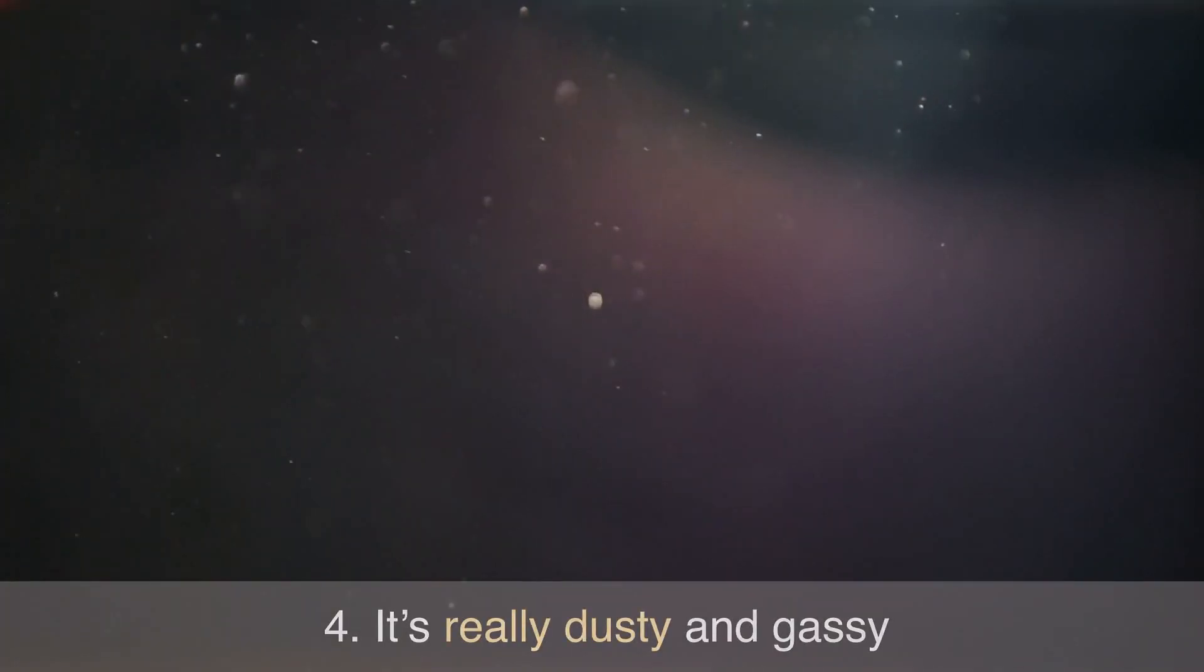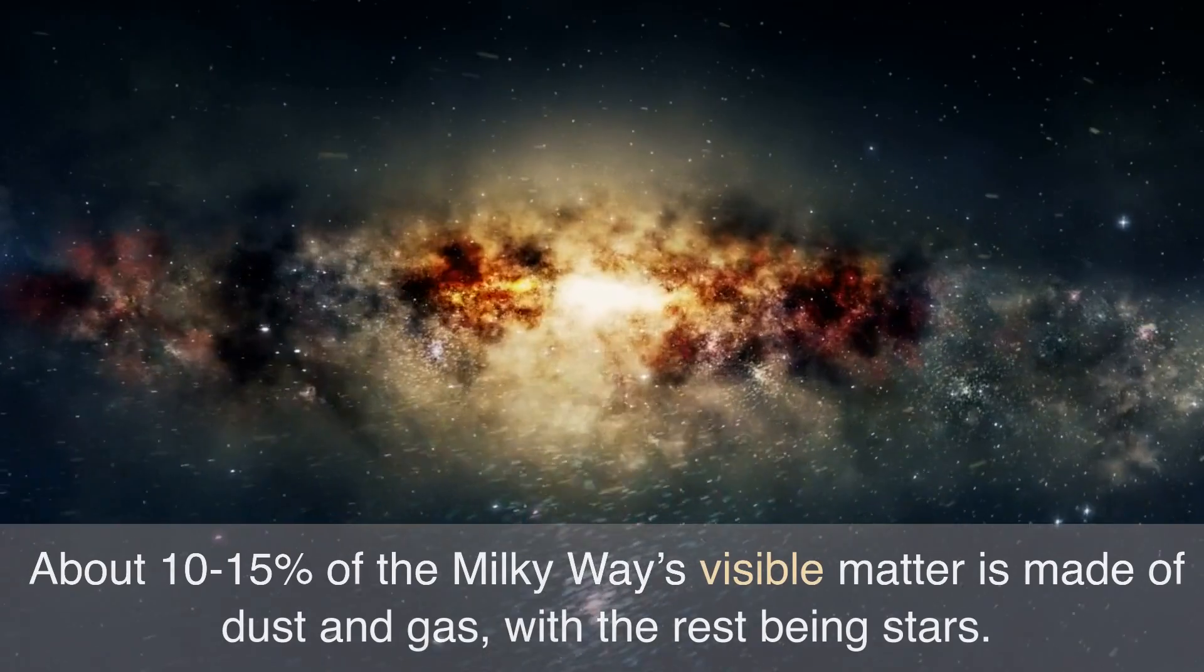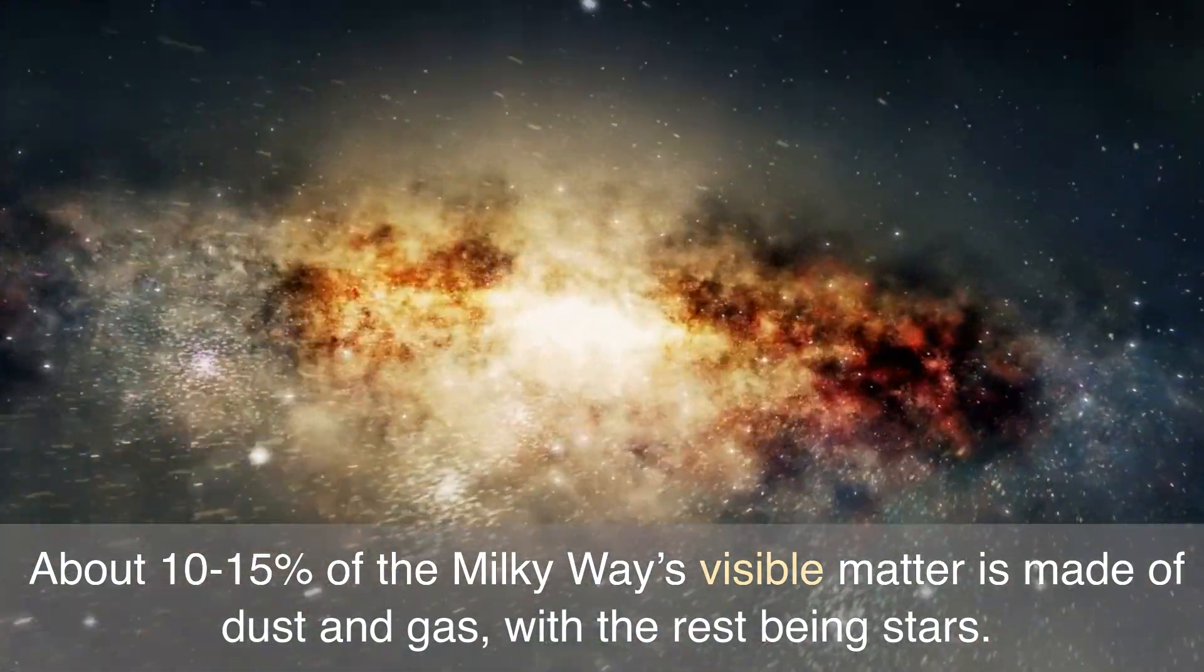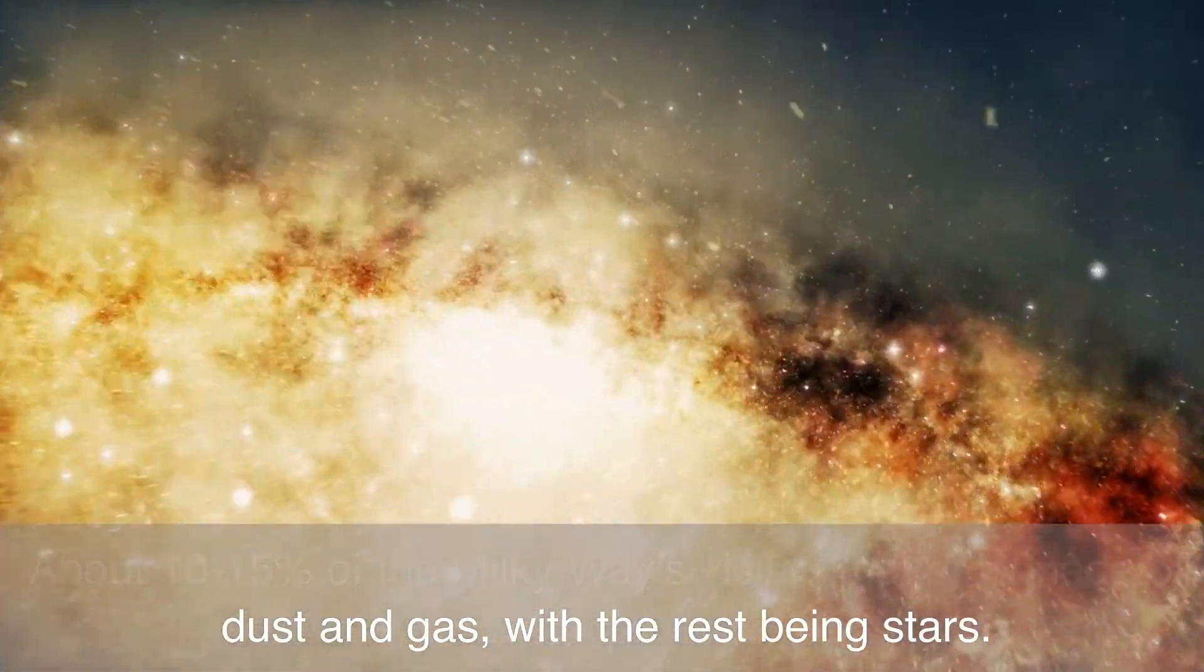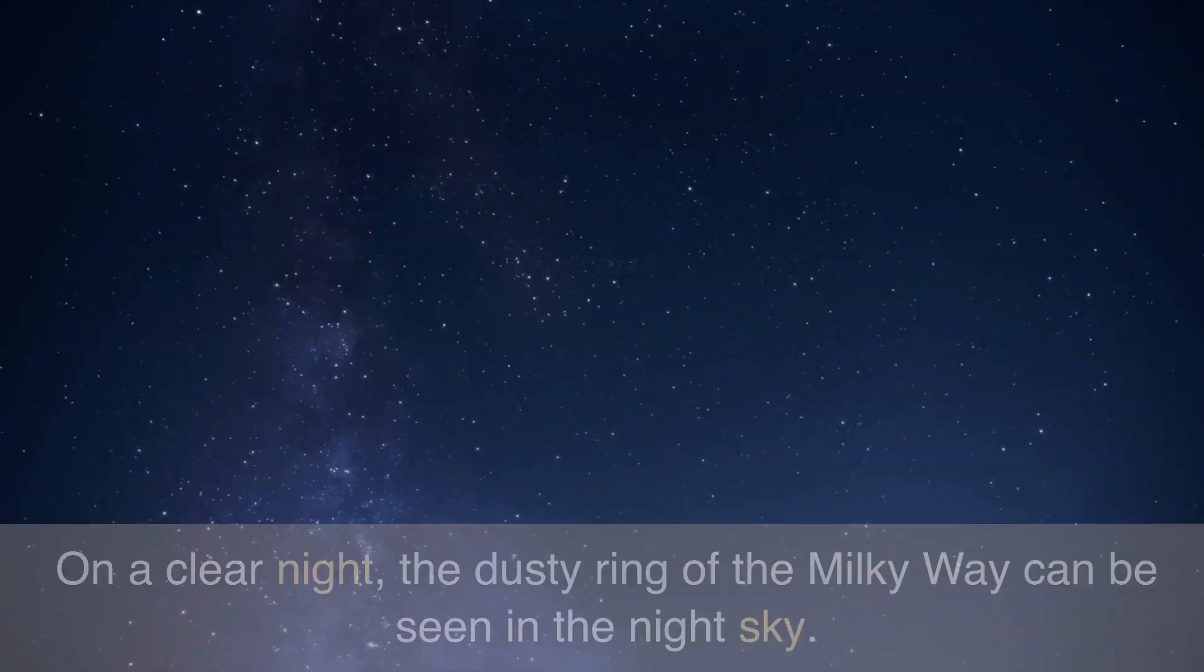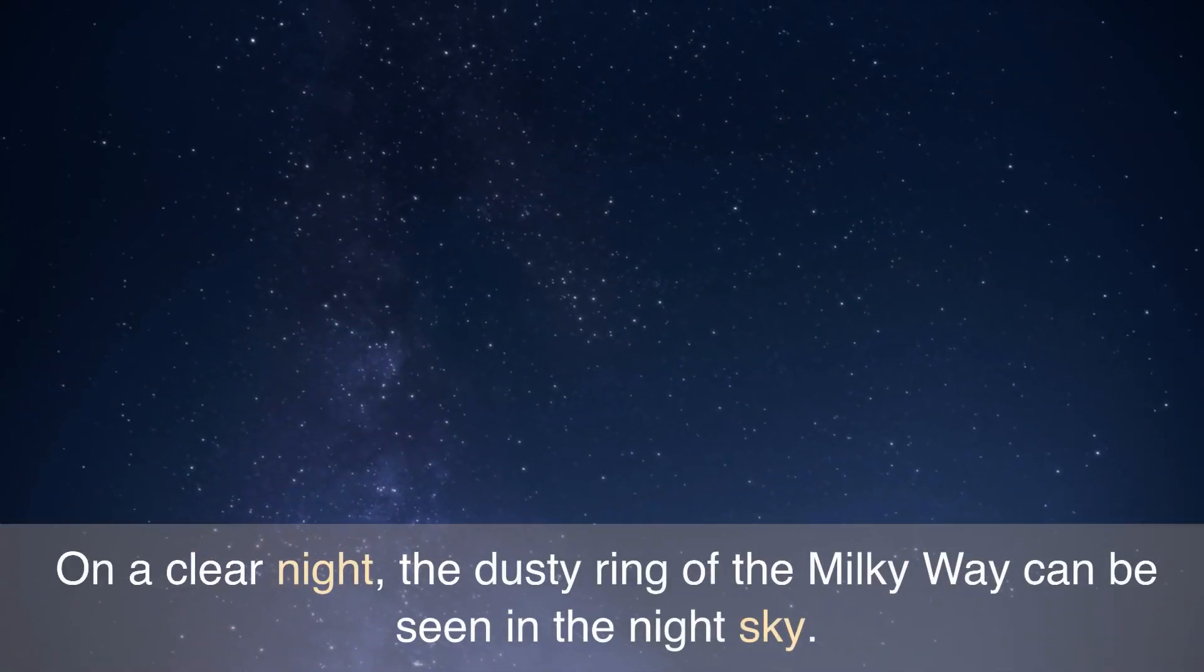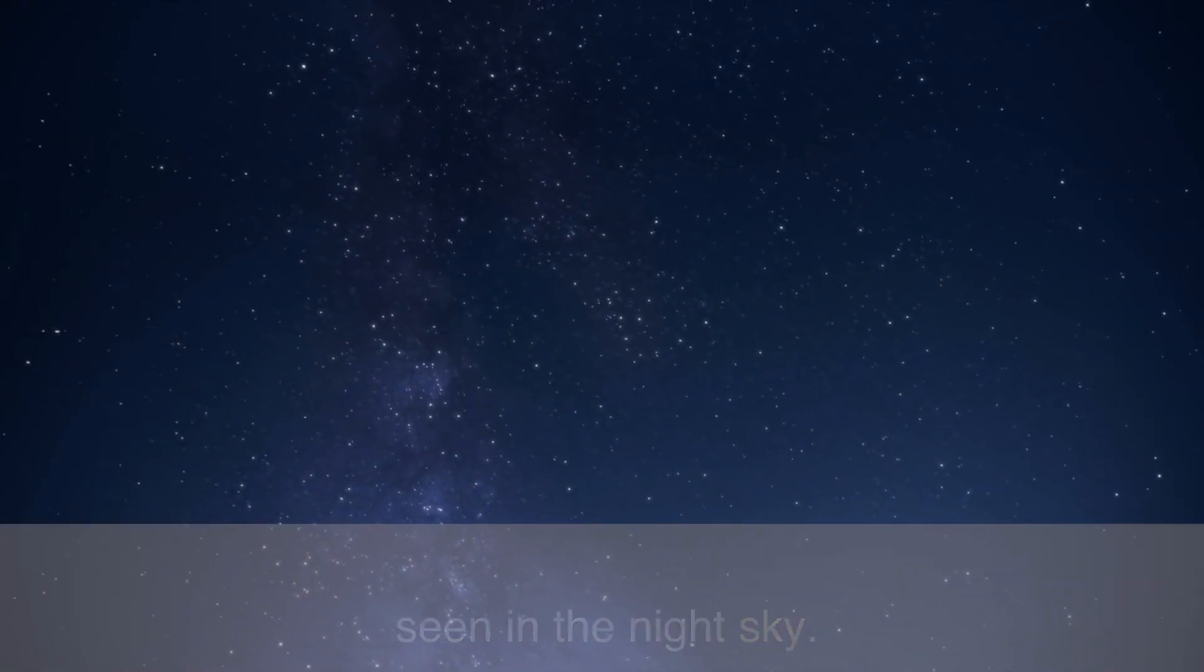Number 4: It's really dusty and gassy. About 10-15% of the Milky Way's visible matter is made of dust and gas, with the rest being stars. On a clear night, the dusty ring of the Milky Way can be seen in the night sky.